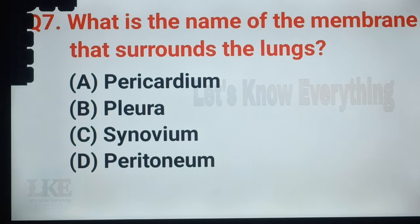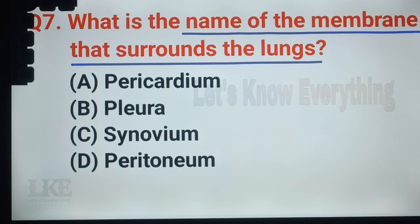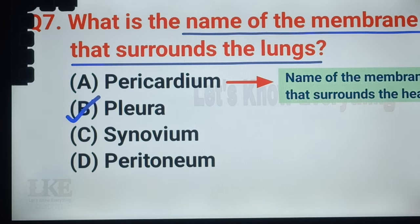Question number 26: what is the name of the membrane that surrounds the lungs? A. Pericardium, B. Pleura, C. Synovium, D. Peritoneum. Right answer: option B, Pleura. Pleura is the name of the membrane that surrounds the lungs. Option A, Pericardium is the name of the membrane that surrounds the heart.